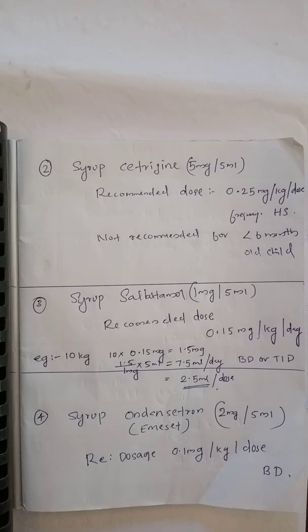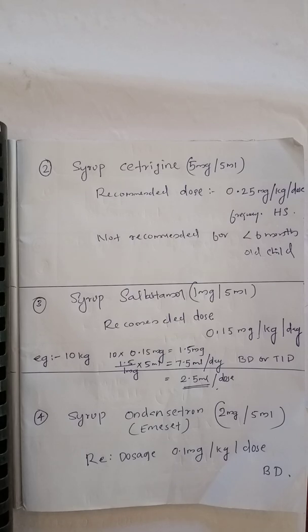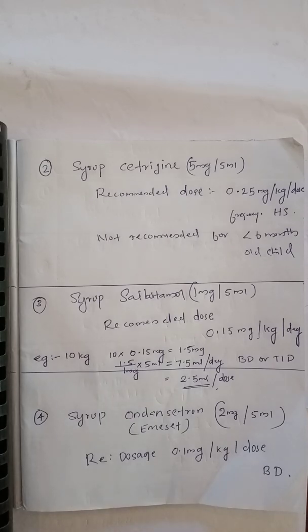The recommended dose is 1.5 mg per day. The available strength is 1 mg per 5 ml, so 1.5 mg ÷ 1 mg × 5 ml = 7.5 ml per day. We can give this twice daily or thrice daily. If giving thrice daily, 7.5 ml divided by 3 = 2.5 ml per dose.